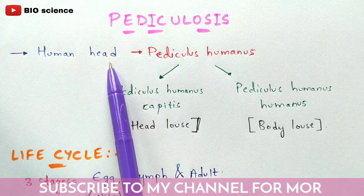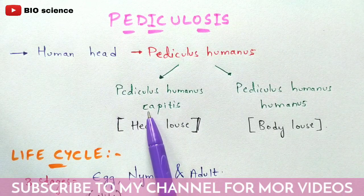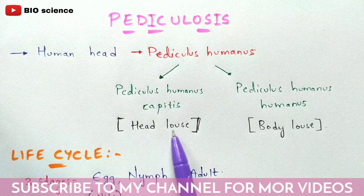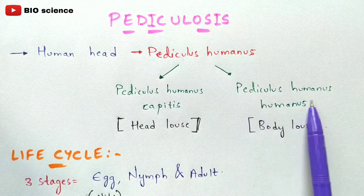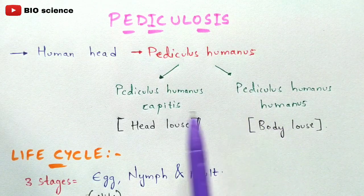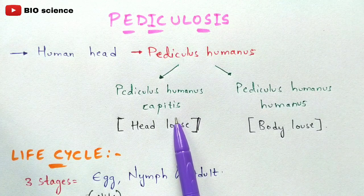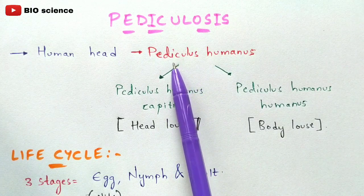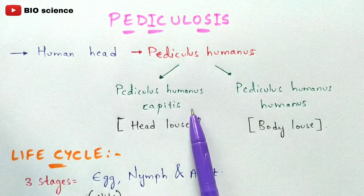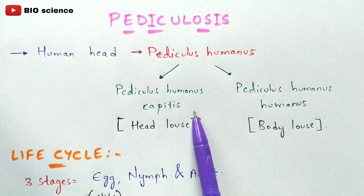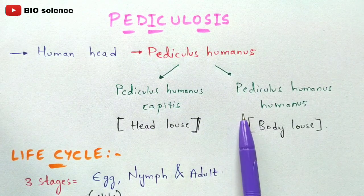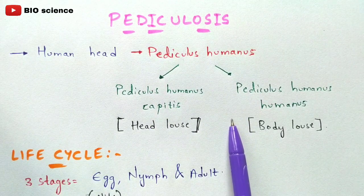This disease occurs in the region of the head. Pediculus humanus capitis is commonly called head louse, and Pediculus humanus humanus is commonly called body louse. Both subspecies cause the same life cycle in human beings.